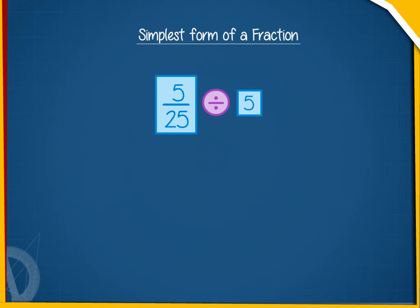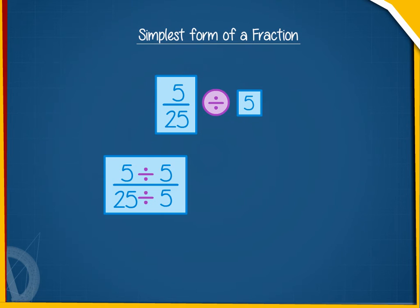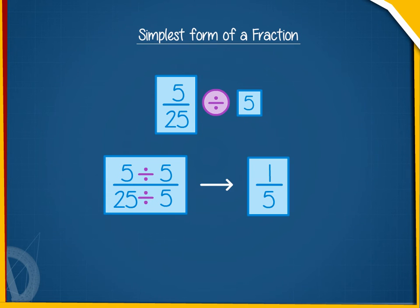we get 5 divided by 5 upon 25 divided by 5, equal to 1 by 5. Hence, 5 by 25 in its lowest form can be written as 1 by 5.